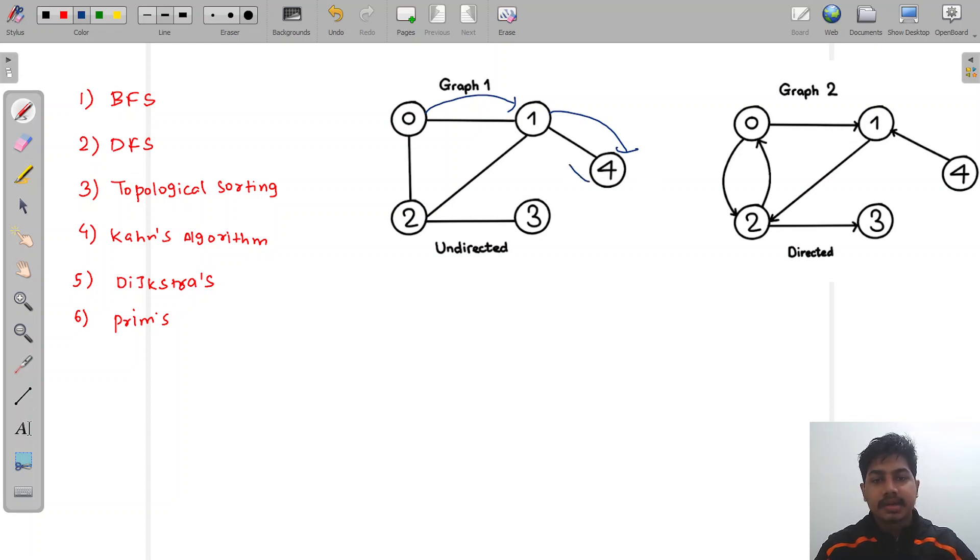Similarly, if we would have started from something like this, if we have visited node two first, then we would have visited node two, then we would have explored the branch of two—that is, we would have visited node three and so on.